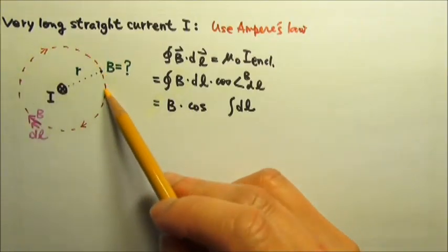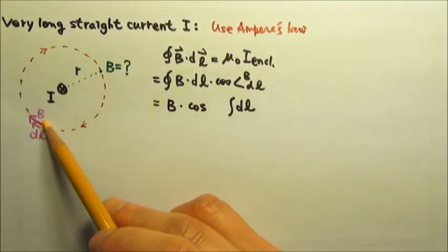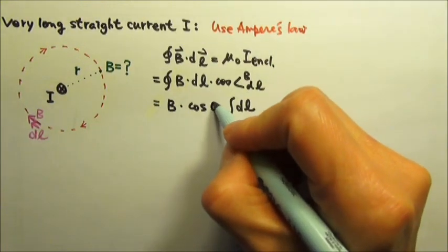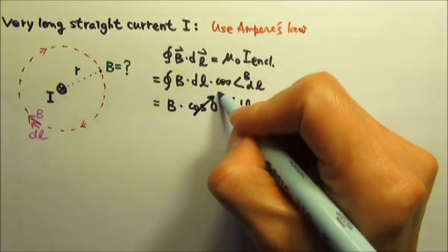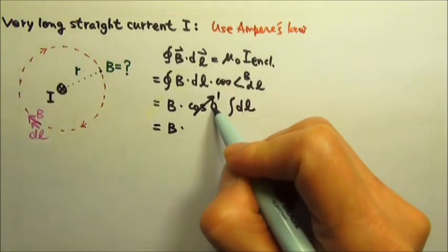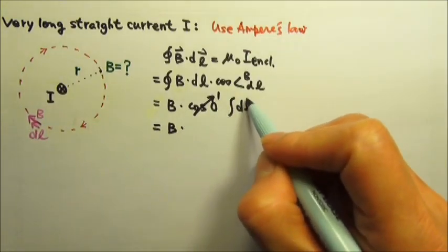This way, everywhere on the loop, the angle between B and dl would be 0, so we have cosine 0 here, which is 1. And so this equals B times 1 times the integral of dl.